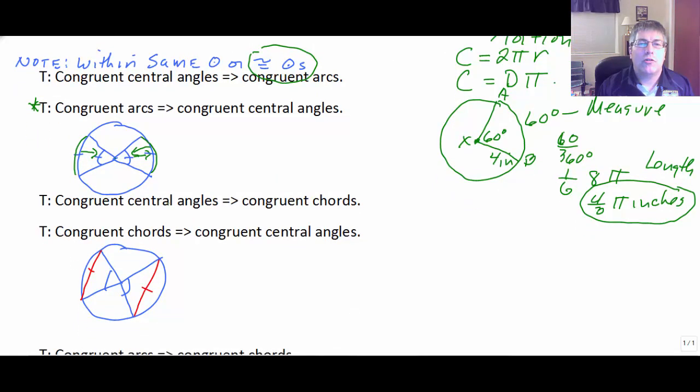Well, congruent central angles also cut congruent chords. So if these two central angles are congruent, that means our red chords must also be congruent. And if you think about that, that makes sense. If I have a wider and wider angle, it's going to make for a longer and longer chord.